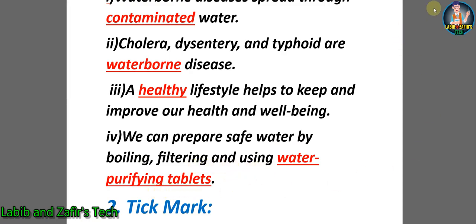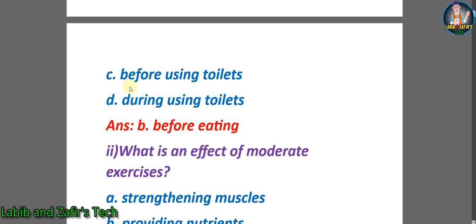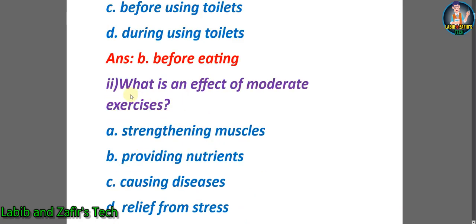Number four: we can prepare safe water by boiling, filtering, and using water purifying tablets. Now let's go through some tick marks. Number one: when must we wash our hands? A) during eating, B) before eating, C) before using toilets, D) during using toilets. The correct answer is B) before eating.